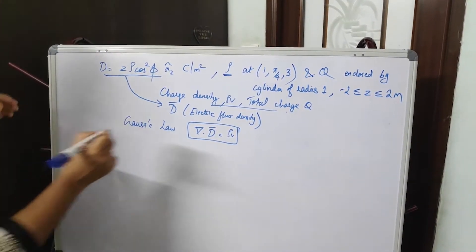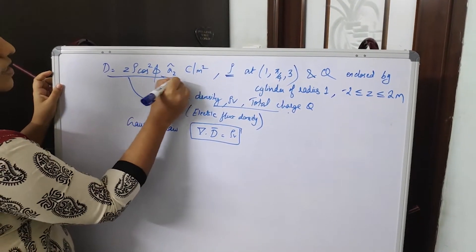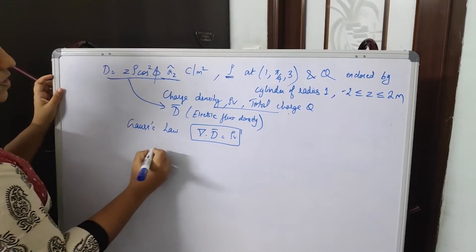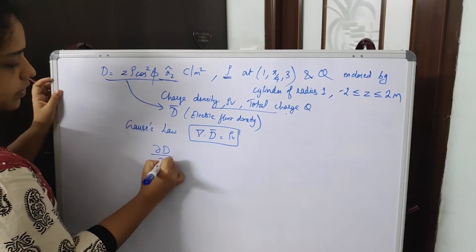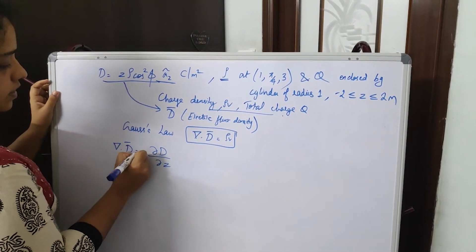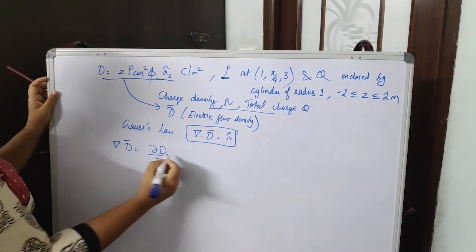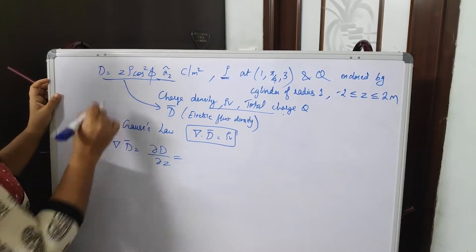First you are taking the divergence, del dot D, divergence of D. And this is having only Z components, so it will be dou D by dou Z. As it does not have any rho component or phi component, you can directly take like this, dou D by dou Z.